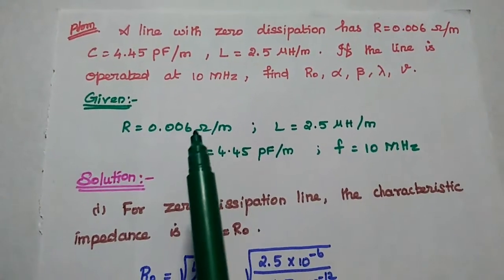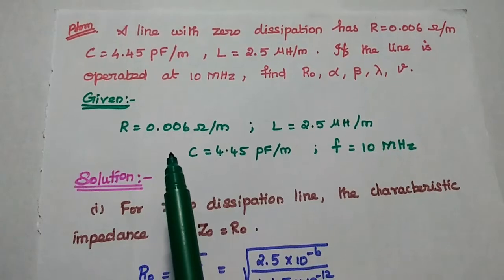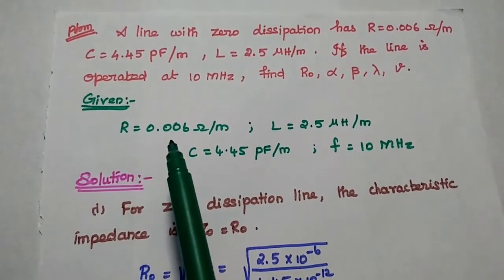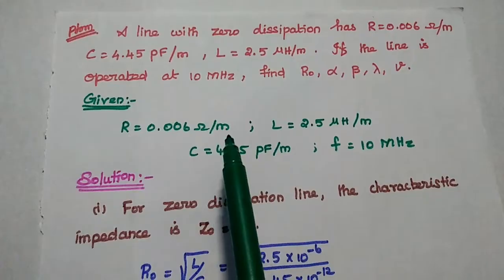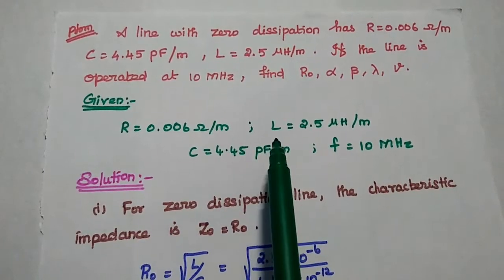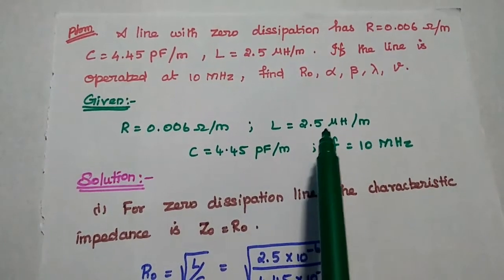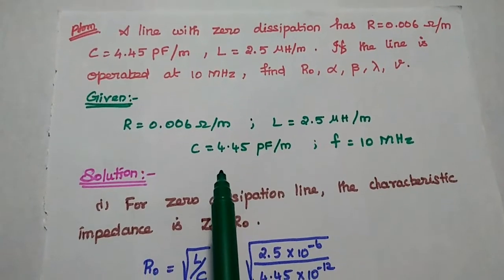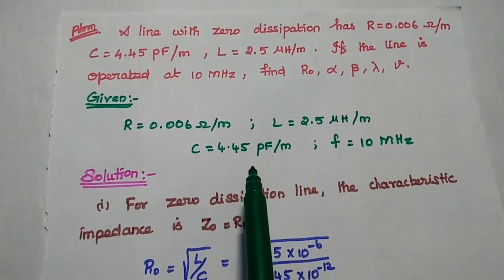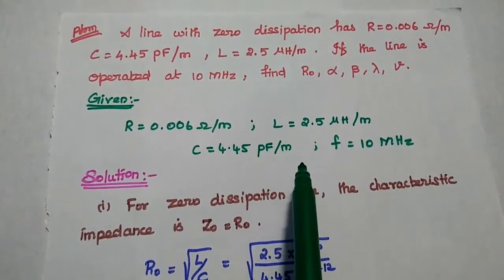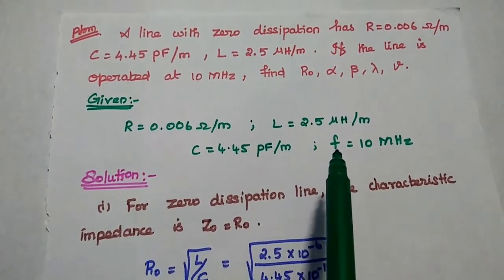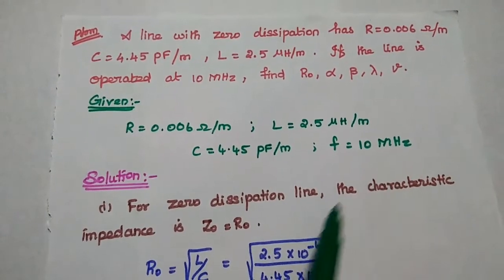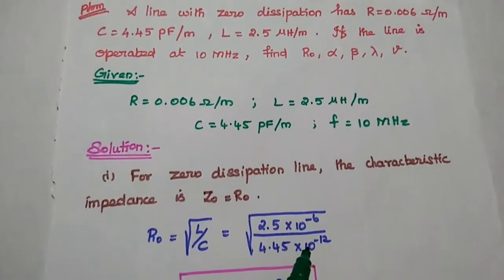First, we write the given data from the problem. Resistance R is equal to 0.006 ohm per meter. Inductance L is equal to 2.5 microhenry per meter. Capacitance C is equal to 4.45 picofarad per meter. Frequency F is equal to 10 MHz.